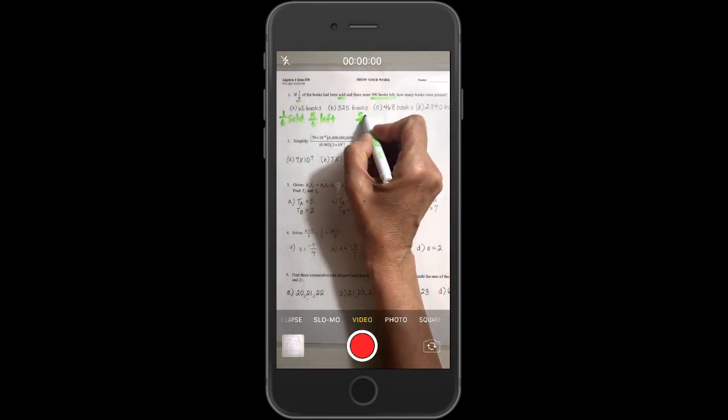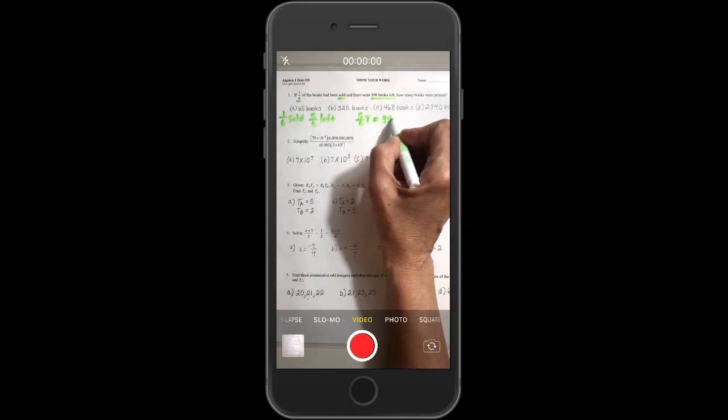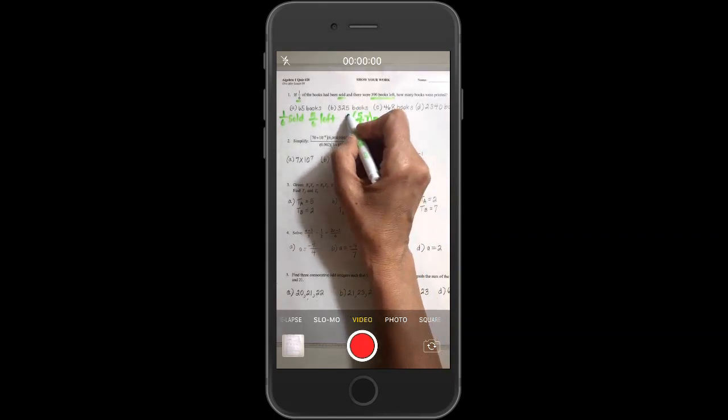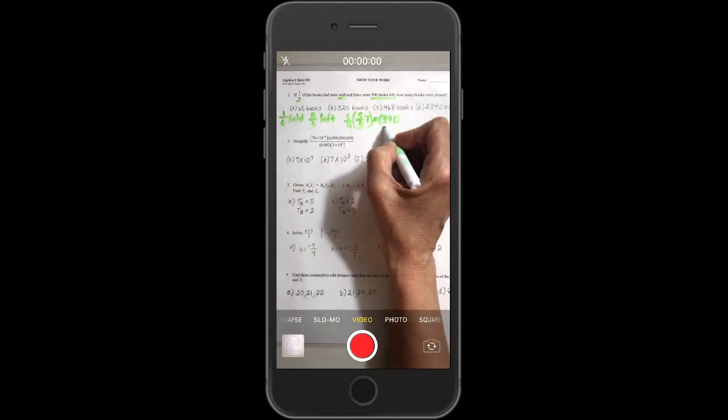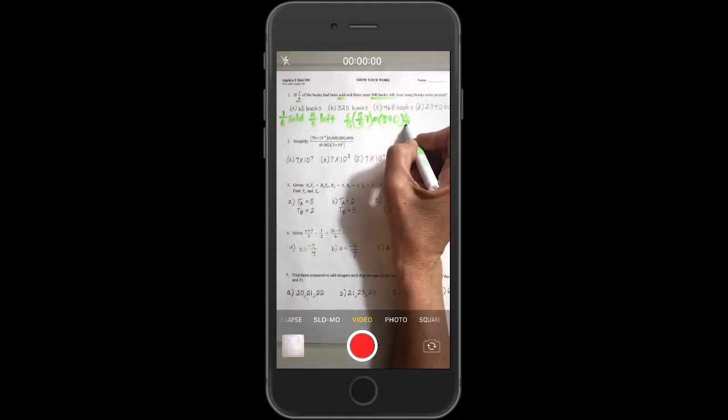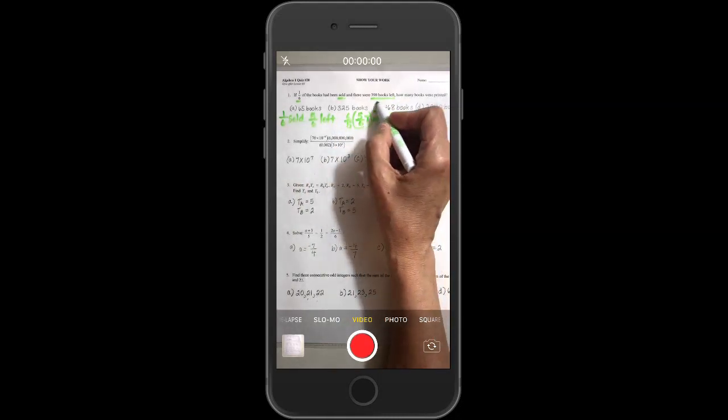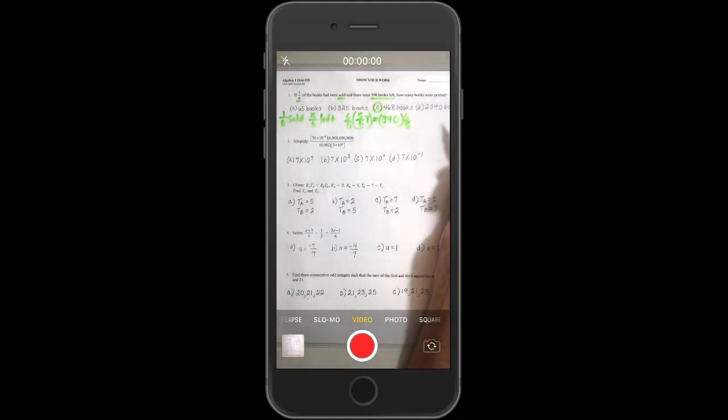So, you would set it up as an equation, five-sixths of the total equals 390. And then, you would multiply by your reciprocal and when you do, you get 468 books.